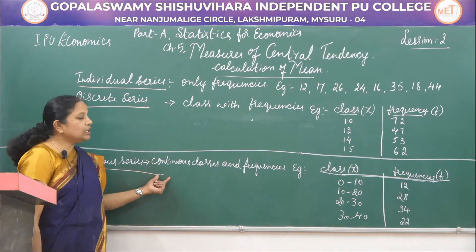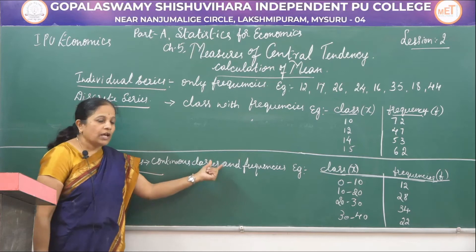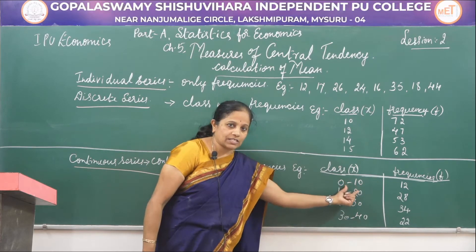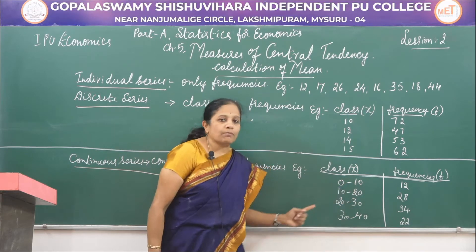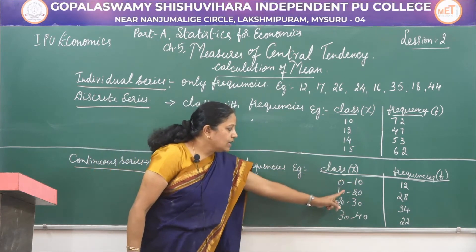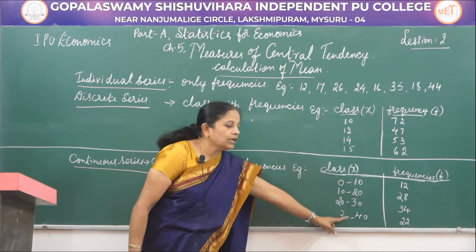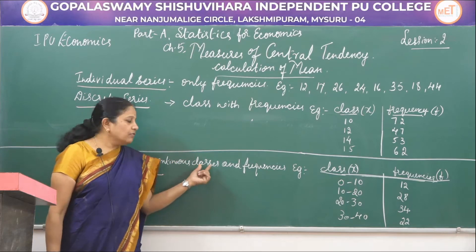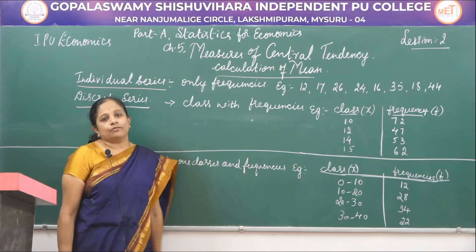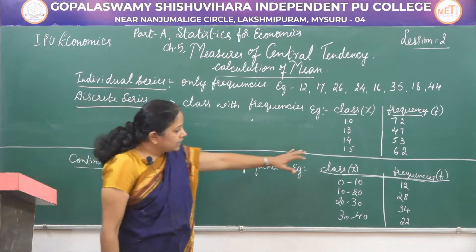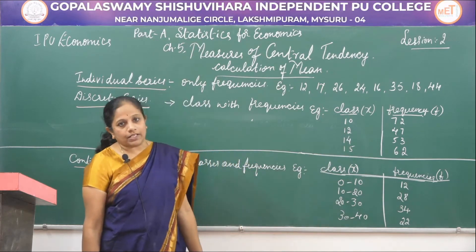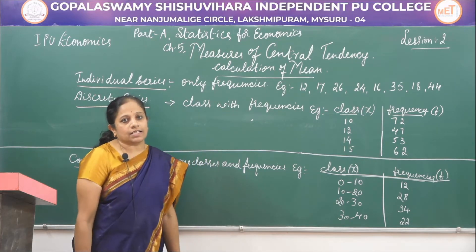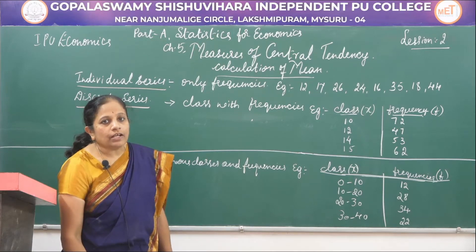The third one is continuous series. Continuous series are those in which the classes are continuous. They are mentioned as class intervals. The continuity of the numbers can be seen here. For example, 0 to 10, 10 to 20, 20 to 30, 30 to 40, 40 to 50, and so on. A continuous series is one which has continuous classes and also frequencies. With these three types of classes and frequencies, we calculate the important statistical averages — mean, median and mode.